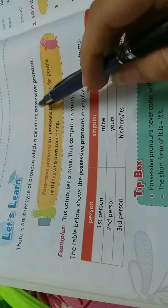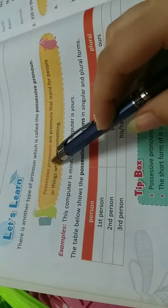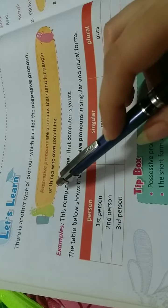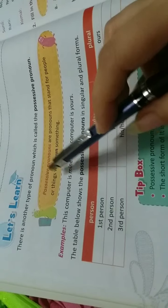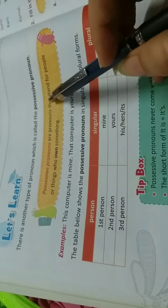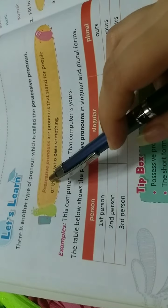Now, we will discuss possessive pronouns. Possessive pronouns are pronouns that stand for people or things who own something. Whenever you want to show that something belongs to someone, you can use possessive pronouns.